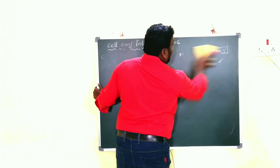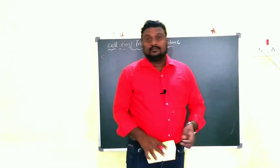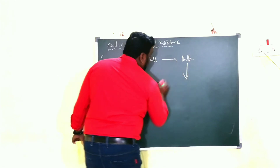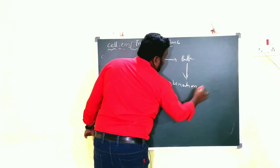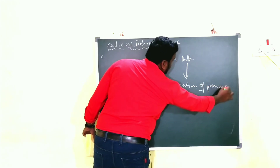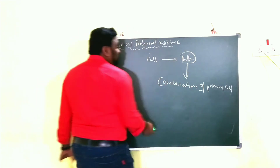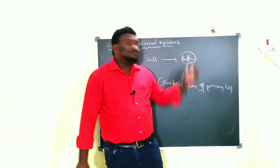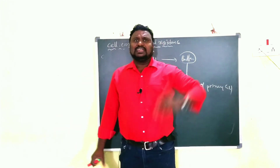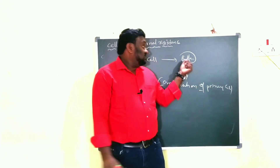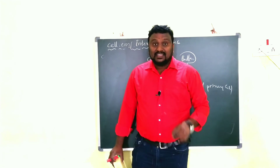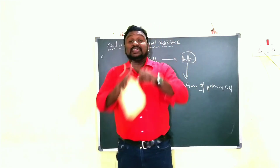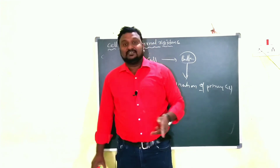What is the difference between a cell and a battery? Both do the same thing — convert chemical energy into electrical energy — but a battery is a combination of a number of primary cells taken as a single unit. When we use a combination of cells, that is called a battery.